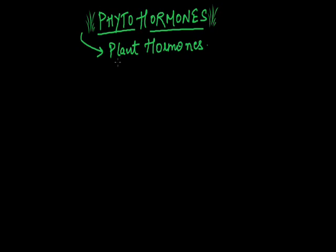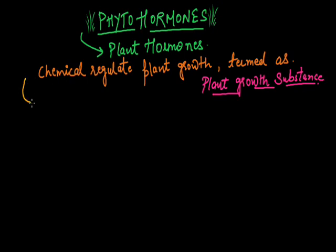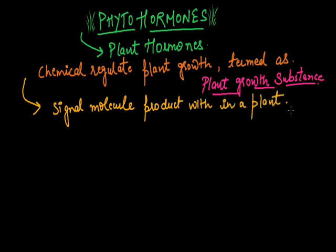Now we will discuss what are plant hormones. Plant hormones are mainly chemicals that regulate plant growth, or they are also termed as plant growth substance. Plant hormones are signal molecules produced within and they occur in very small concentration.